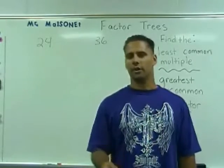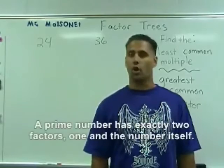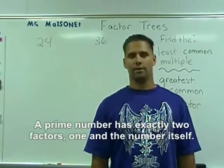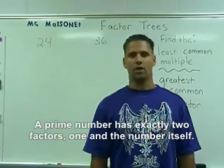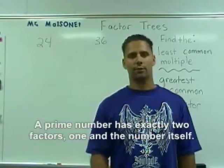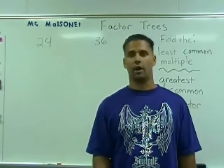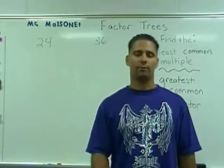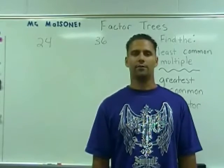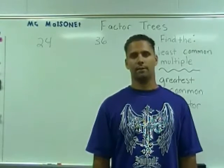A prime number is a number that has exactly two factors: one times the number itself. An example would be the number 3. You can only multiply 1 times 3 to produce the number 3. There are no other factor pairs that will produce the number 3. The number 5 is another example of a prime number.